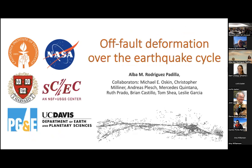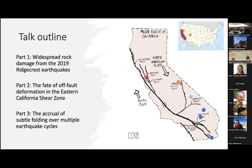So my talk today is titled Off-fault Deformation Over the Earthquake Cycle. To give you a quick outline, I'm going to start by talking about the work that Roland referenced earlier, talking about inelastic deformation or rock damage from the 2019 Ridgecrest earthquakes - that's my blue dot on top of the garb of balls there. Then I will move on to start talking about the fate of this off-fault deformation over longer timescales, reviewing the Ridgecrest result in the context of previous Eastern California Shear Zone earthquakes - those are the blue dots for Landers, Hector Mine, and El Mayor Cucapah. And then in the end, I will expand beyond California to talk a little bit about Utah, but also the Model Plateau of Northern California and Bishop, looking at how off-fault deformation piles in the landscape over really long timescales and what that tells us about how fault zones evolve over time.